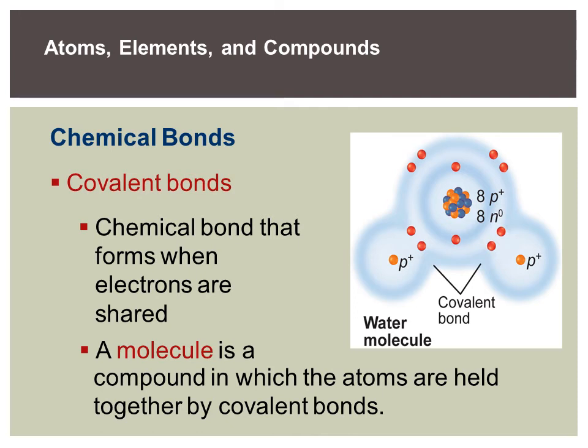There are different types of chemical bonds — we're going to talk about two of them. Covalent bonds — 'co' meaning to share or work together. A covalent bond is a chemical bond that forms when electrons are shared. Some elements don't want to give up or take electrons — they'd rather share. A good example is your water molecule. A molecule is a compound in which atoms are held together by covalent bonds — so a molecule is a special type of compound, and water is an example of that.